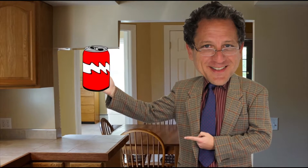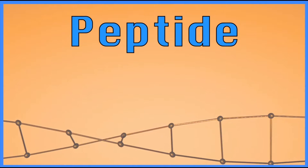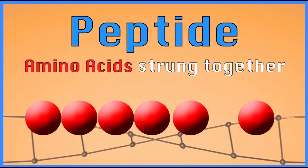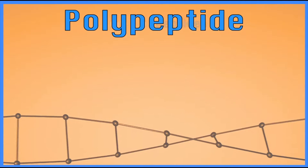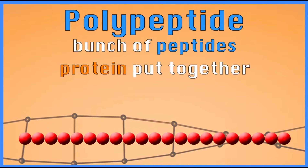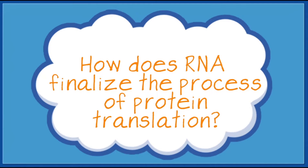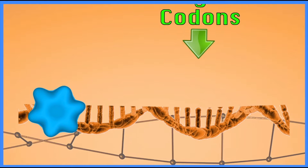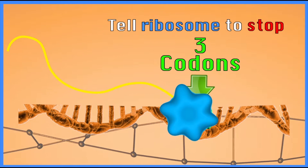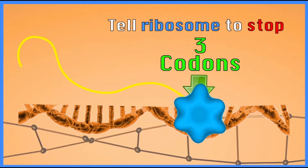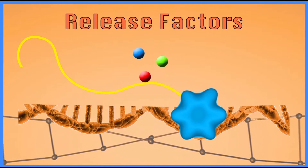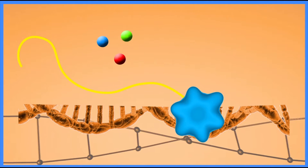So what is a peptide? A peptide is just a bunch of amino acids strung together. A polypeptide means a bunch of peptides, and that would be a protein put together. Then things end — there's a termination point. There are actually three codons that tell the ribosome to stop. In this case they don't code for any amino acids; instead, special release factors come in, knock the ribosome off the mRNA, and release the protein.